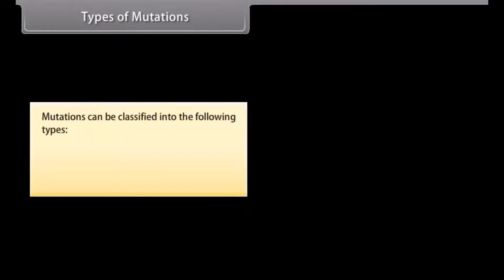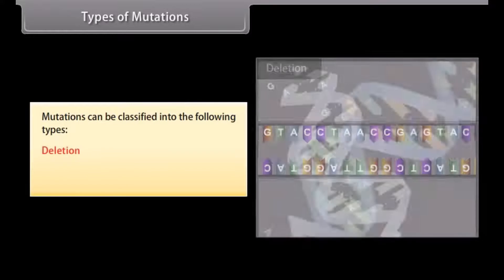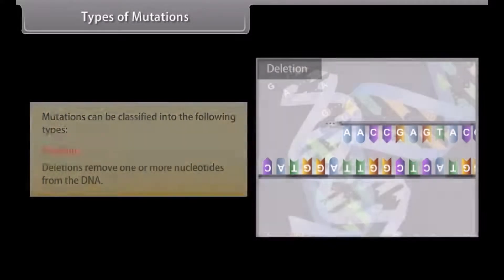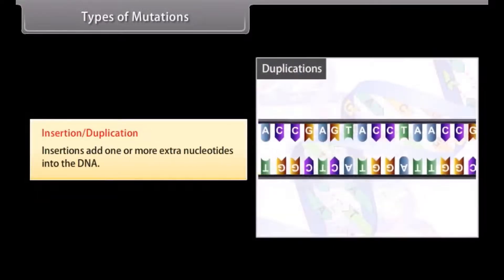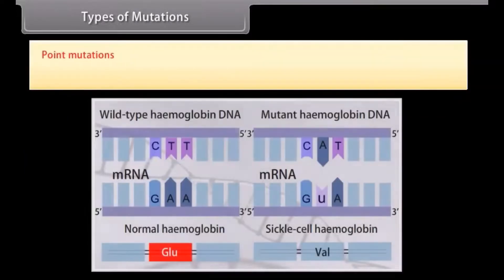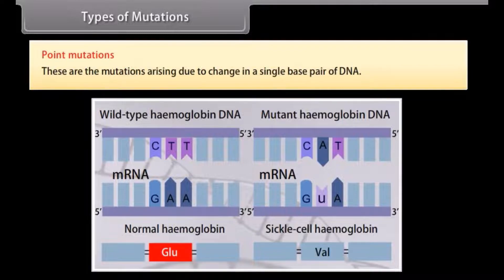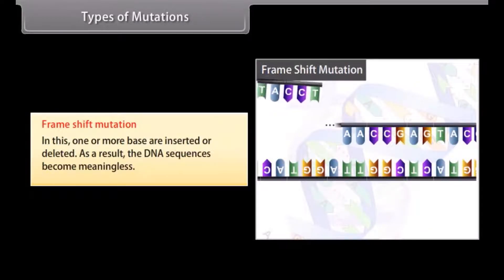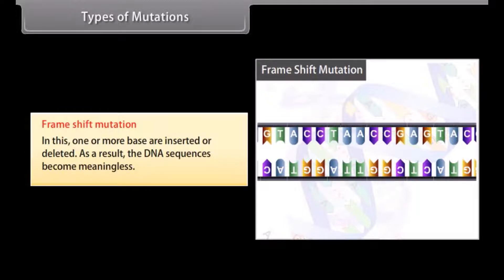Types of mutations: Deletion — deletions remove one or more nucleotides from the DNA. Insertion or duplication — insertions add one or more extra nucleotides into the DNA. Point mutations — mutations arising due to the change in a single base pair of DNA. Frameshift mutation — one or more bases are inserted or deleted, as a result the DNA sequence becomes meaningless.